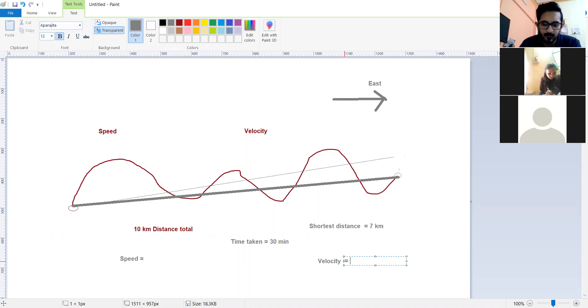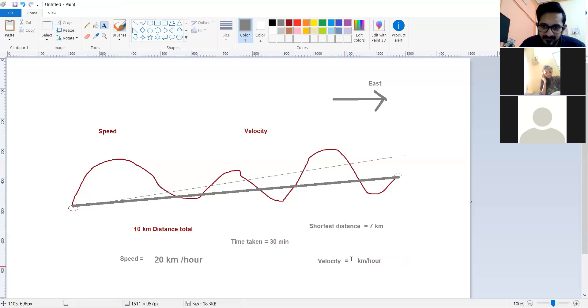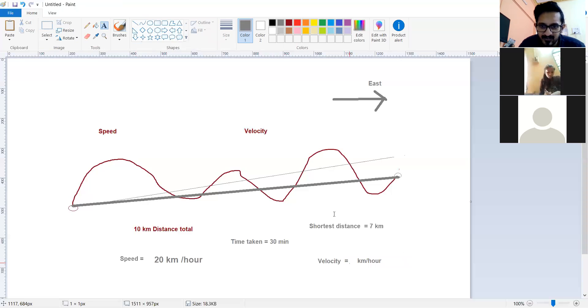Velocity in kilometers per hour? It is 20 kilometers per hour, right. Speed, this is 20 kilometers per hour. What is the velocity? What is the distance here? What is the distance? It is 7 kilometers.